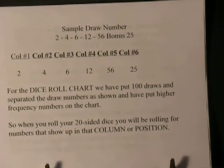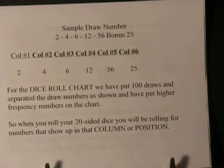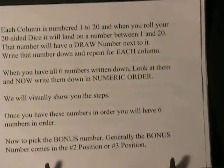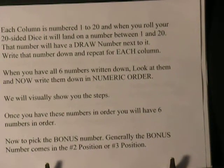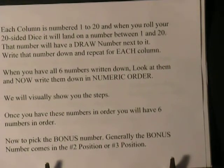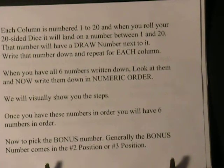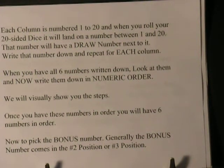So when you roll your twenty-sided dice, you will be rolling for numbers that show up in the column or position of that number. Each column is numbered one to twenty, and when you roll your twenty-sided dice it will land on a number between one and twenty. That number will have a draw number next to it — write that number down and repeat for each column or position column. When you have all six numbers written down, look at them, and now write them down in numeric order.